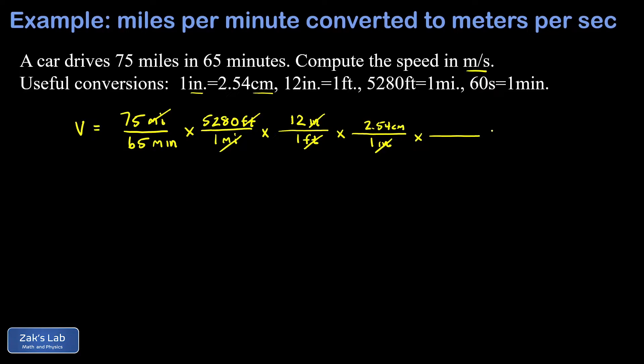The one conversion that wasn't given in the list is based on understanding SI prefixes. I need to know how many centimeters there are in a meter, and that's 100. So I put the 100 centimeters in the denominator to cancel the centimeters, and that's equal to one meter. Now my distance units have been converted to meters.